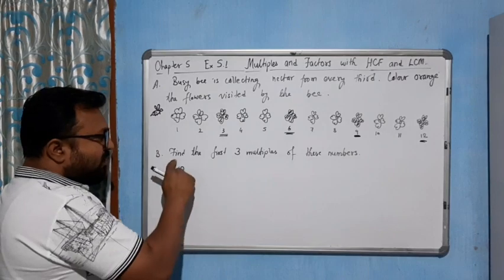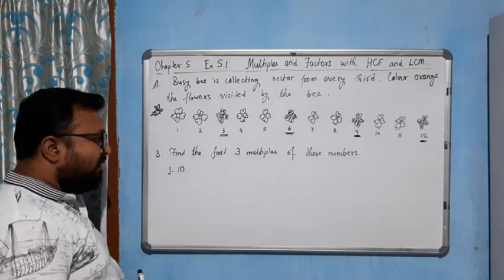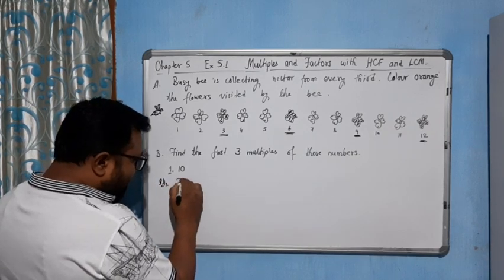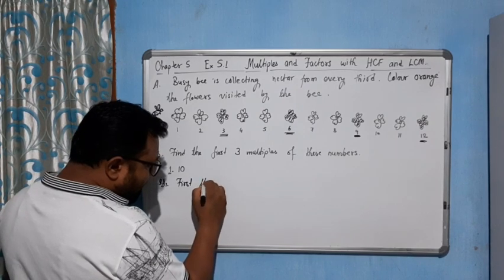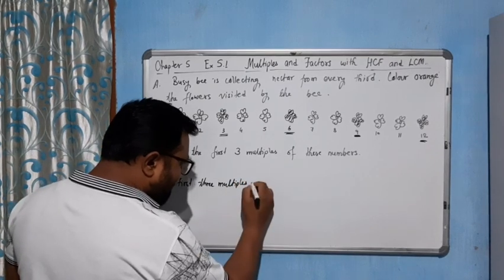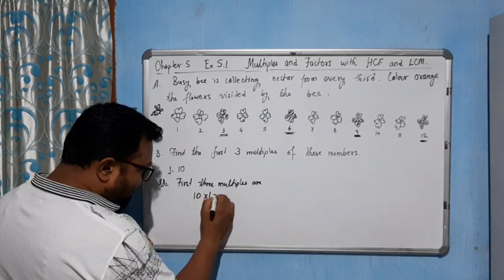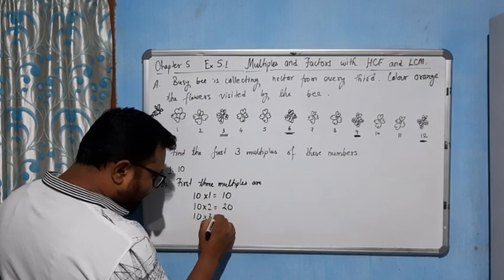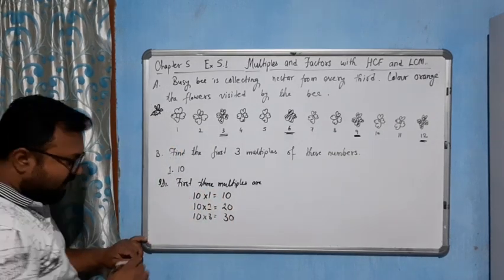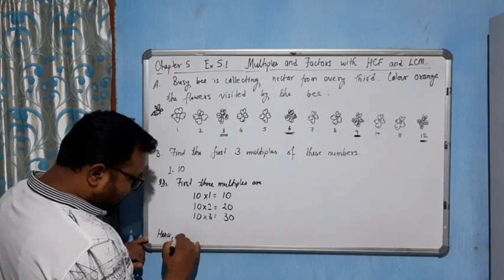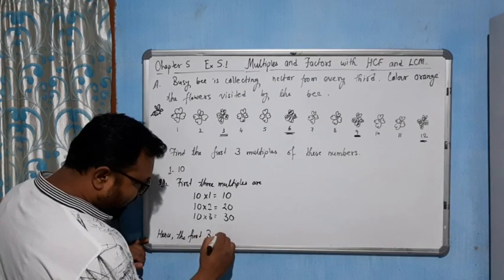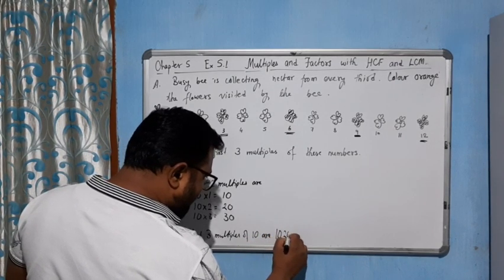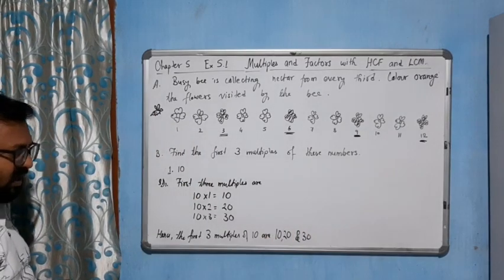Now come to the next question: find the first three multiples of these numbers. The first number is 10. The first three multiples are: 10×1=10 (first multiple), 10×2=20 (second multiple), 10×3=30 (third multiple). Hence the first three multiples of 10 are 10, 20, and 30.